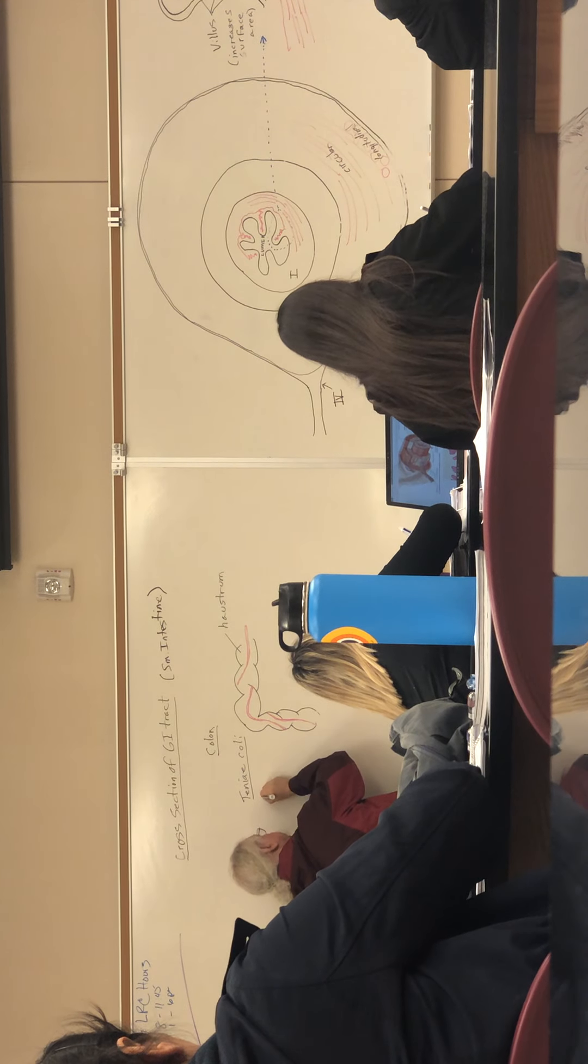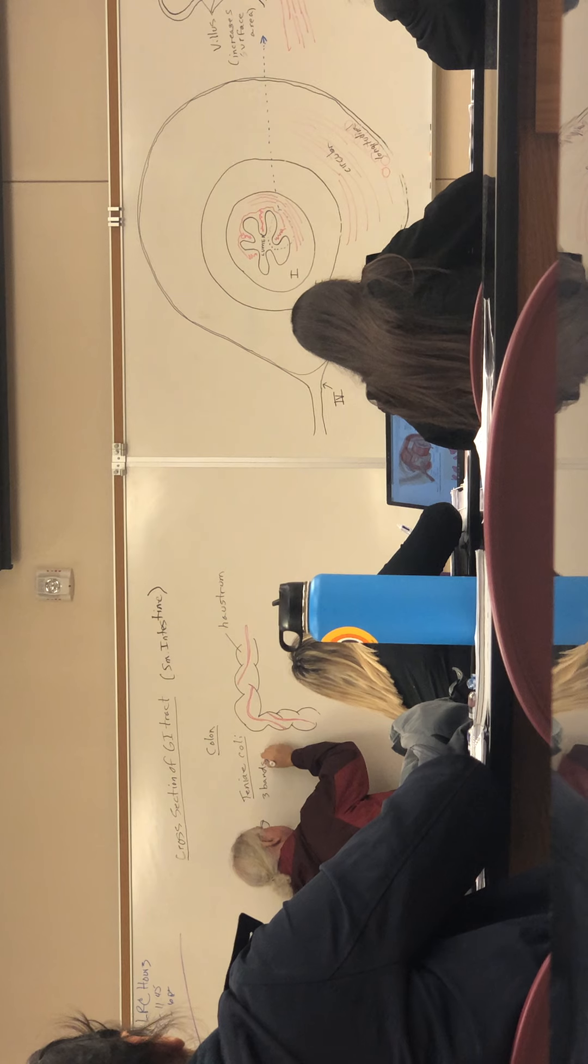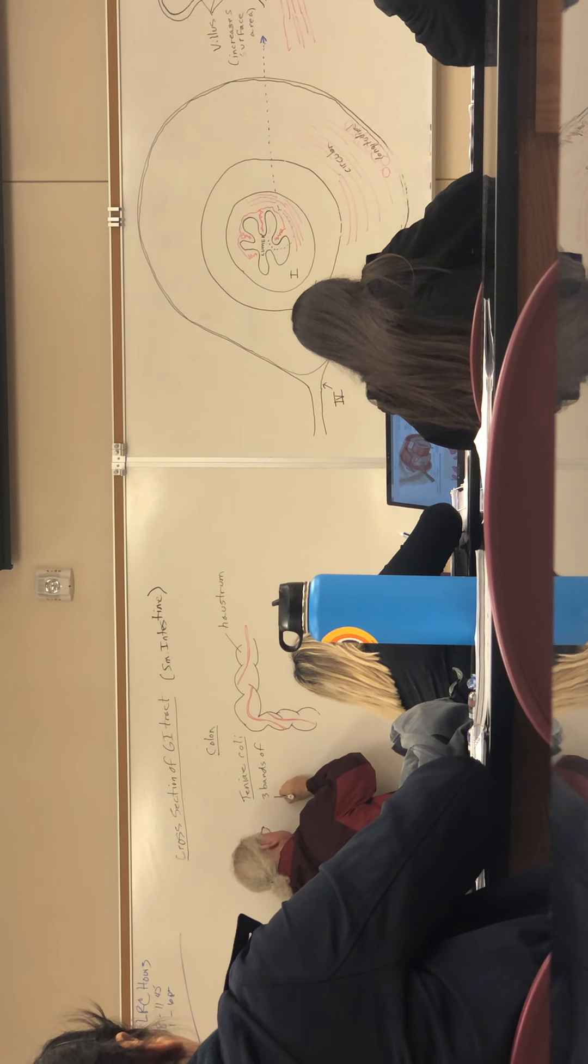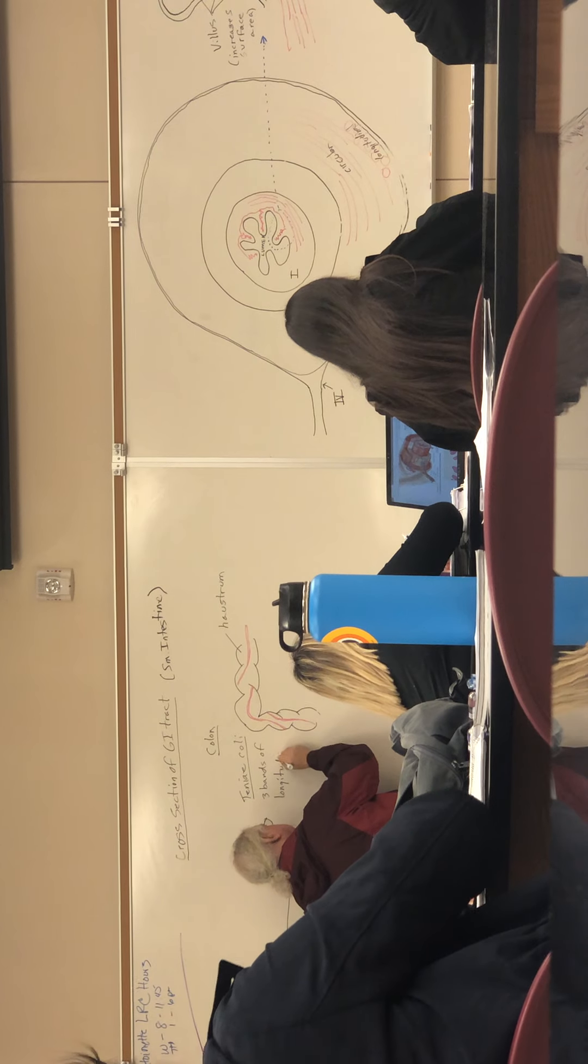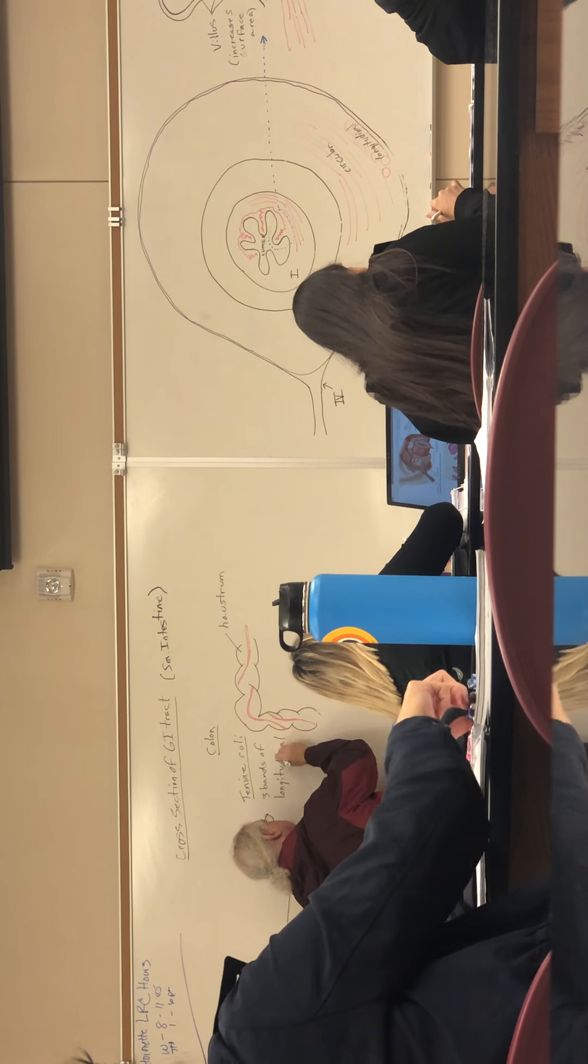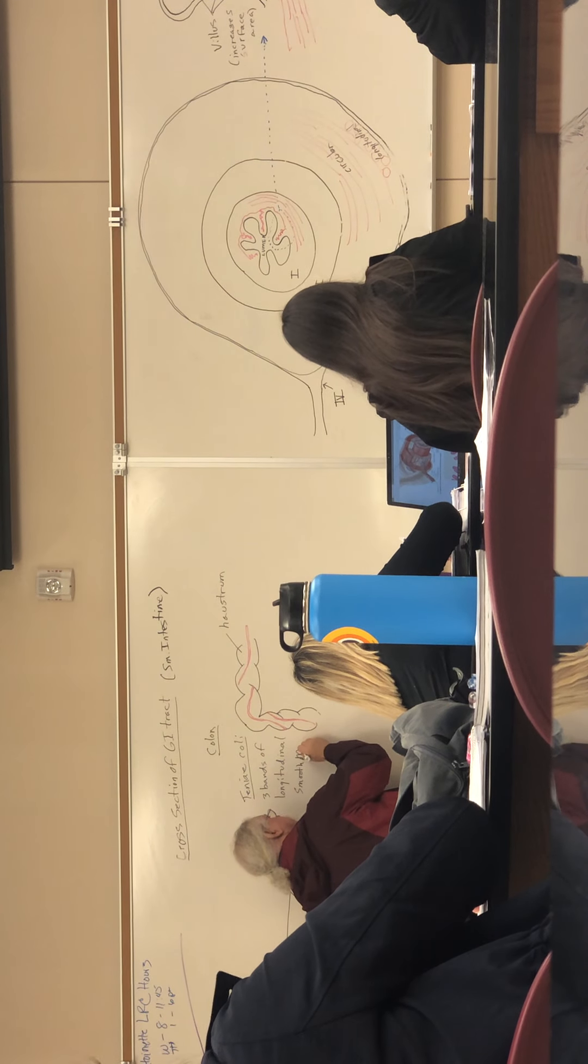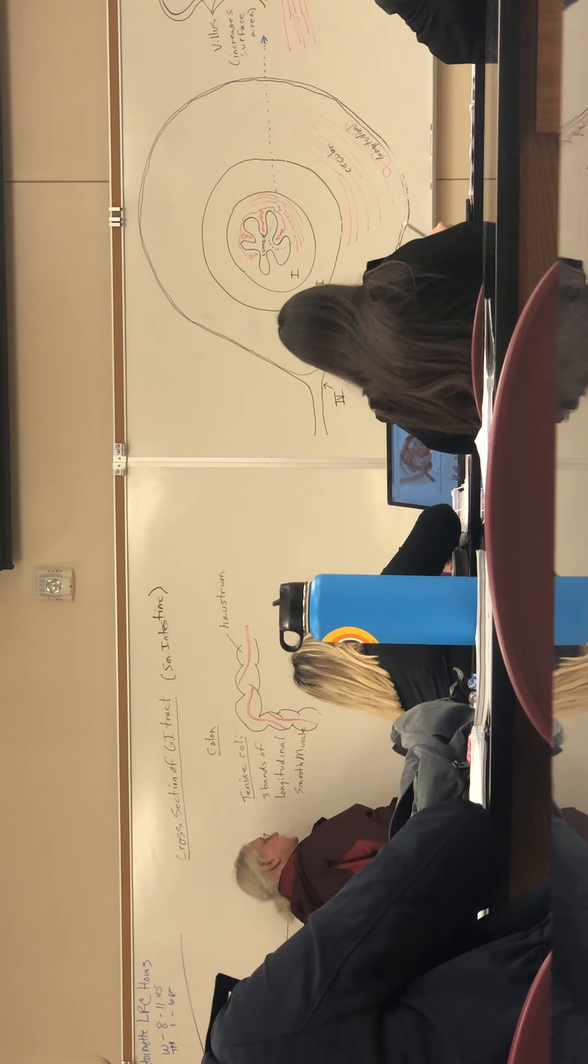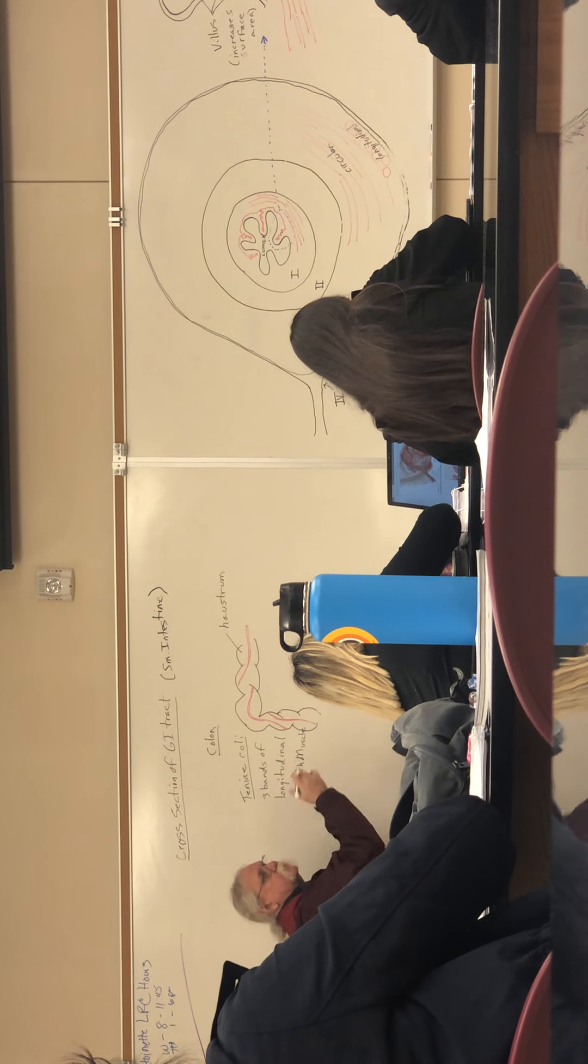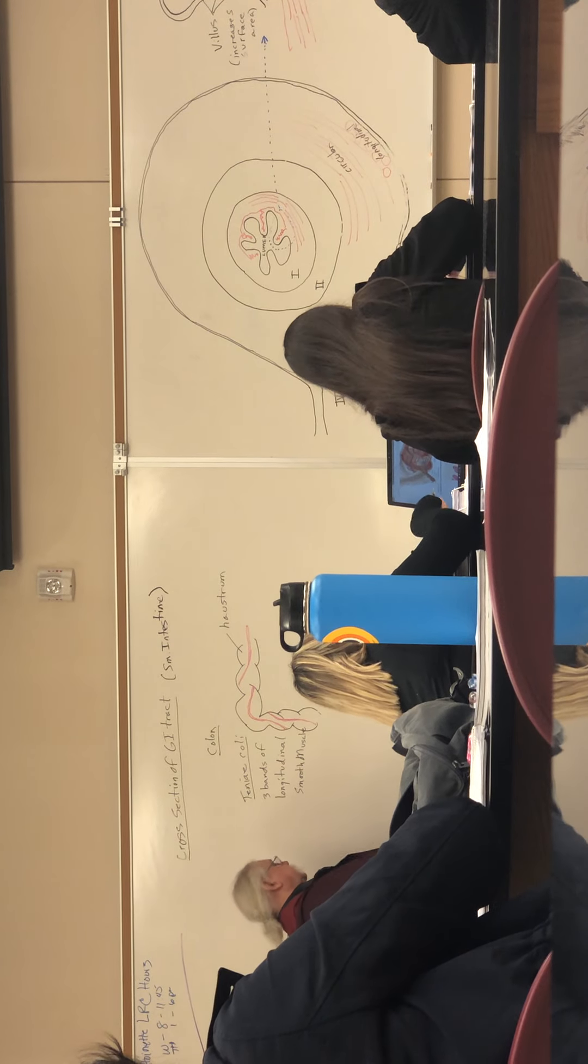Taenia Coli are three bands of longitudinal smooth muscle. The circular smooth muscle still goes all the way around, but the longitudinal is broken into three bands.